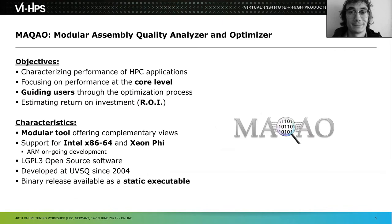What is MAQAO in reality? MAQAO is a binary analysis tool that we use as a layer to perform HPC or performance-related analyses. The main objectives are to characterize the performance of HPC applications. We focus on performance at the core level, because if you have good performance at a single core level, moving to parallelism usually just means duplicating the same process over different compute units.